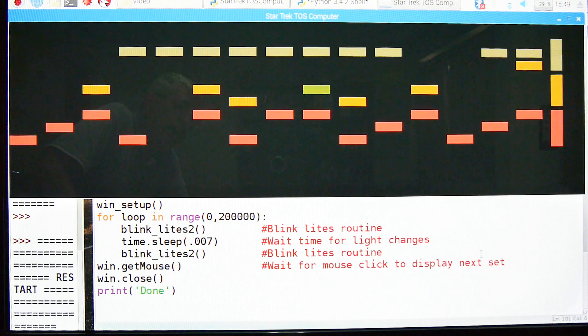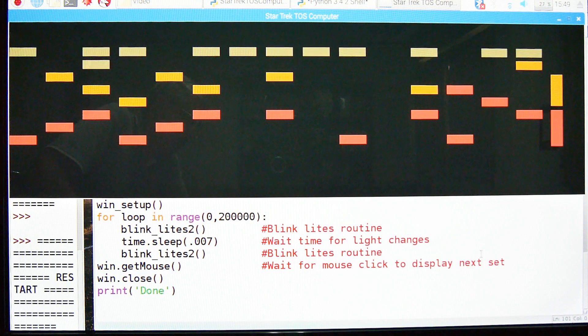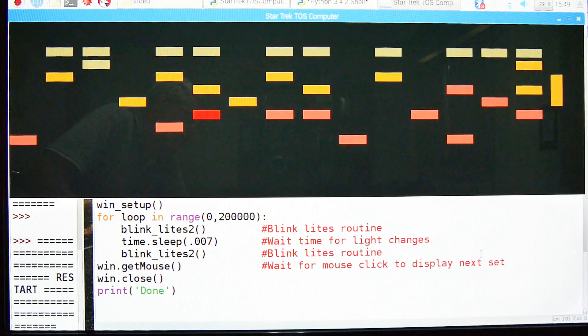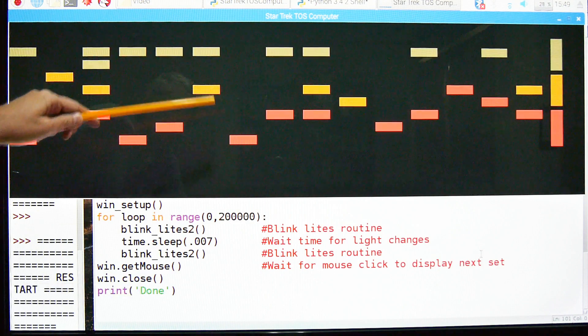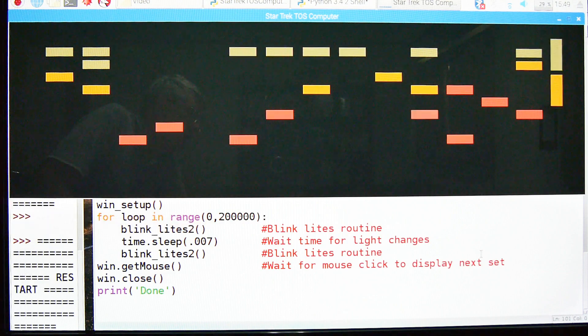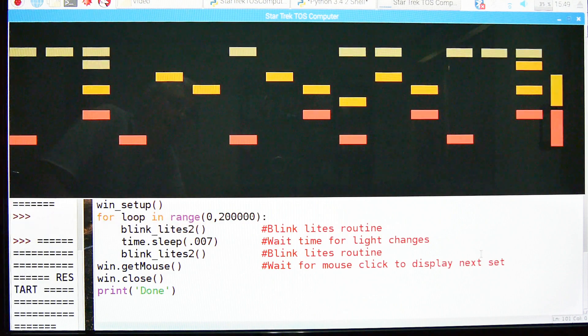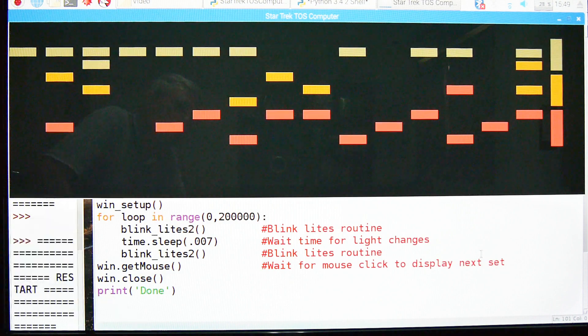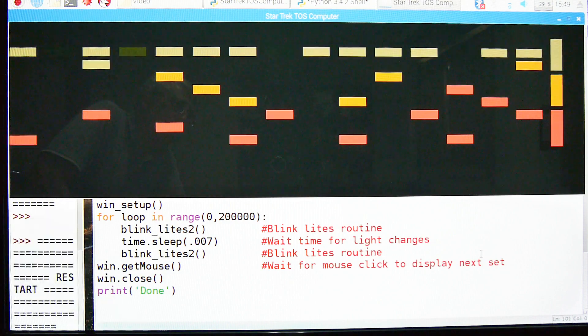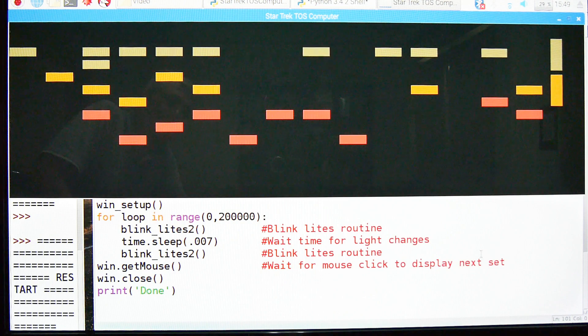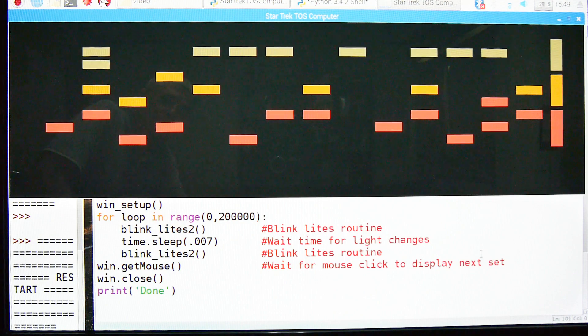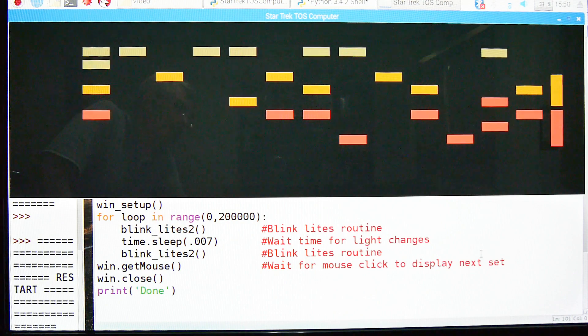My guess is the original panel was wired using rotary switches and they were probably wired in parallel in series to give a random effect. I have not tried to understand what that pattern is and replicate it. These are actually done on a random basis. But again, they blink as closely as possible to the original series. Let's go look at the code and see how this is written.